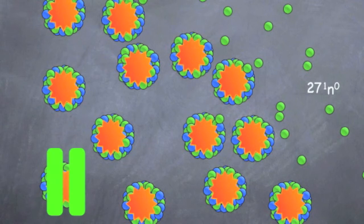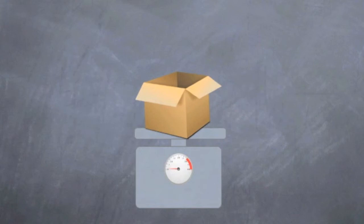If you put more and more uranium atoms together, it gets more and more radioactive, until one point, and if you add one more, it will blow up. That is the critical mass.